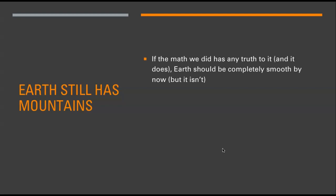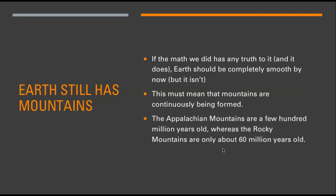So what does that mean? Well, Earth still has mountains — so is my math incorrect? If the math we did has any truth to it — spoiler alert, it does — then the Earth should be completely smooth by now, but it isn't. This must mean that mountains are continuously being formed somehow. And that's actually true. The Appalachian Mountains out east are a few hundred million years old, whereas the Rocky Mountains out west are only about 60 million years old. Mountains have come and gone over Earth's enormous lifespan.